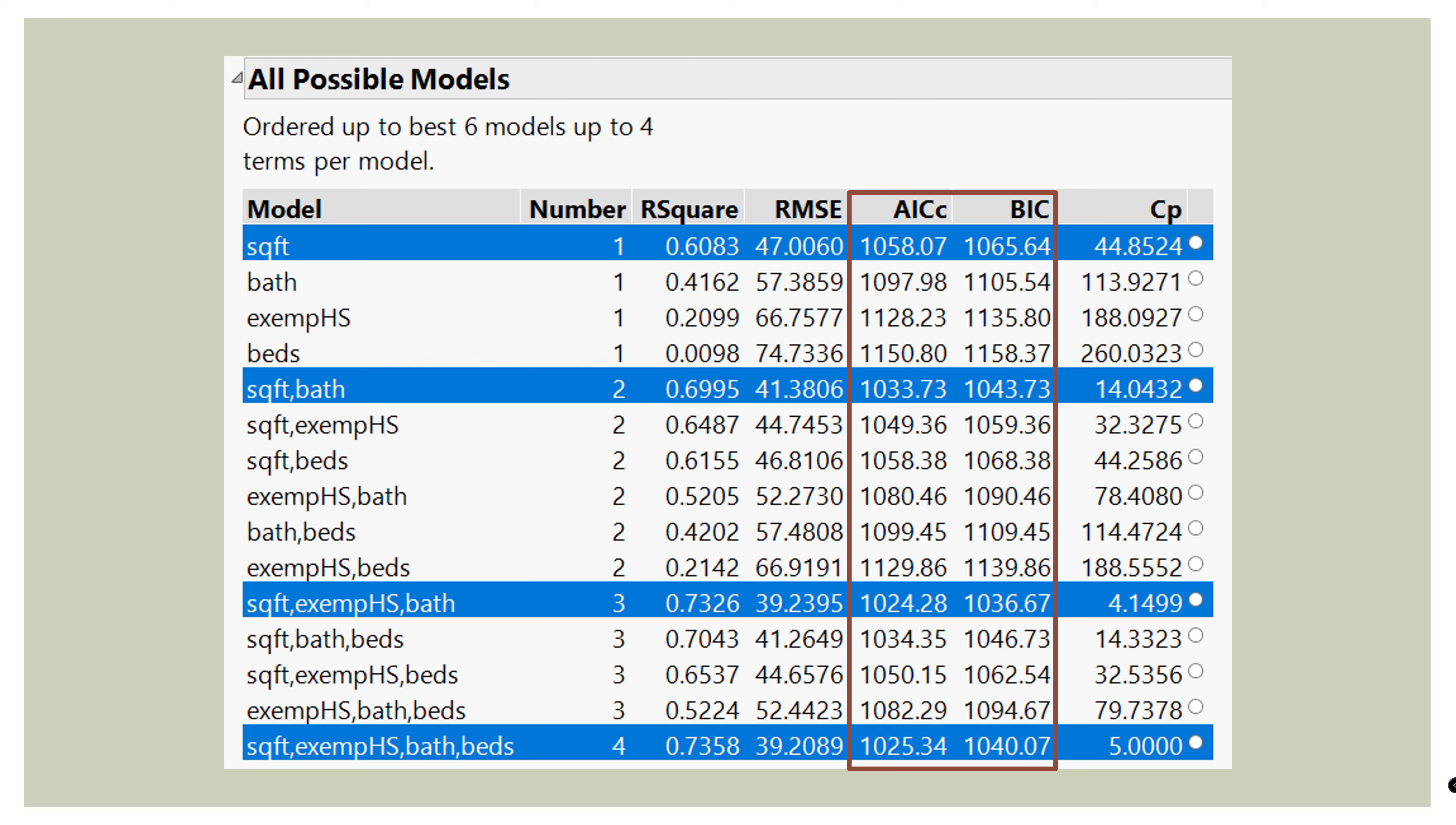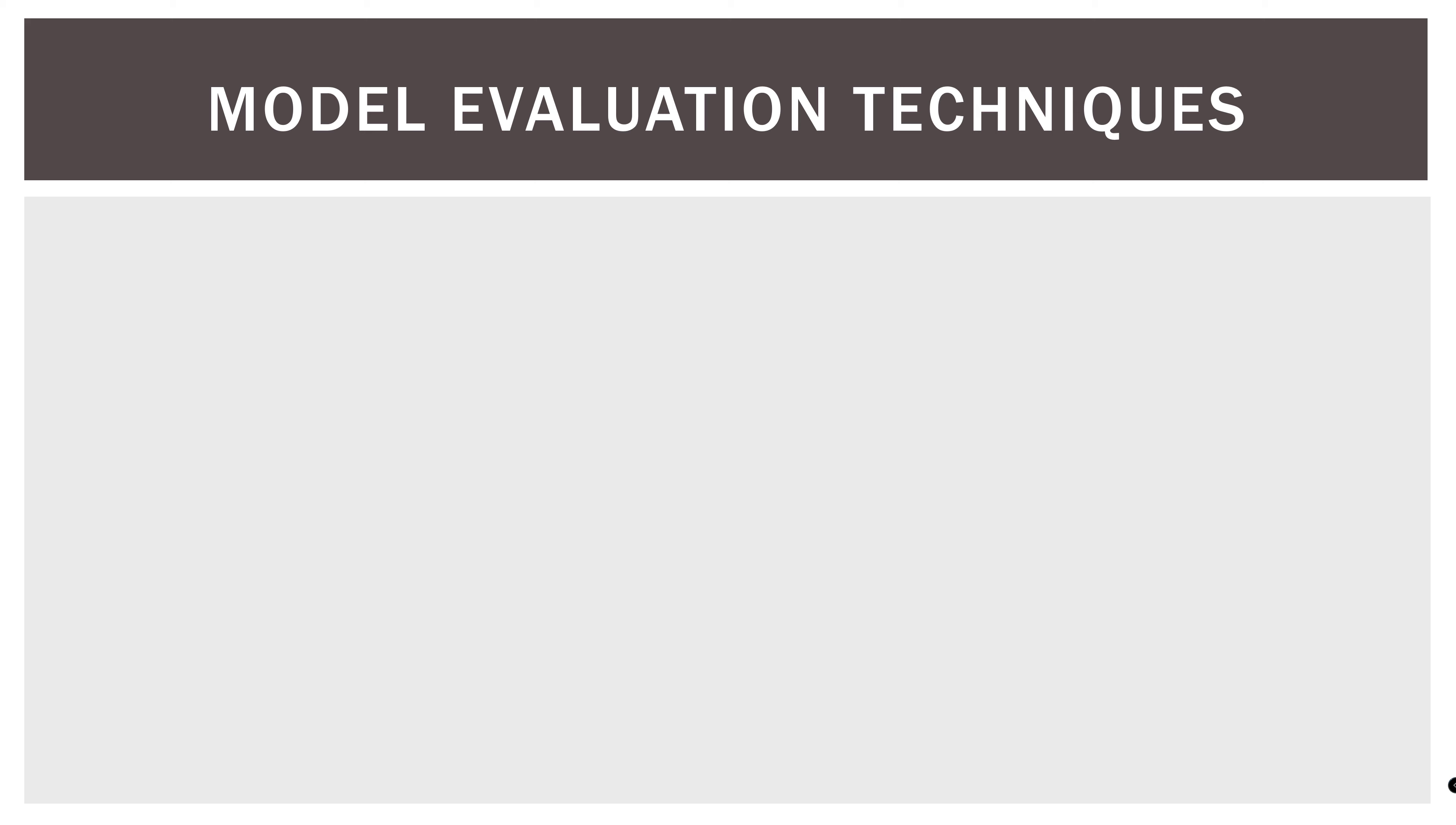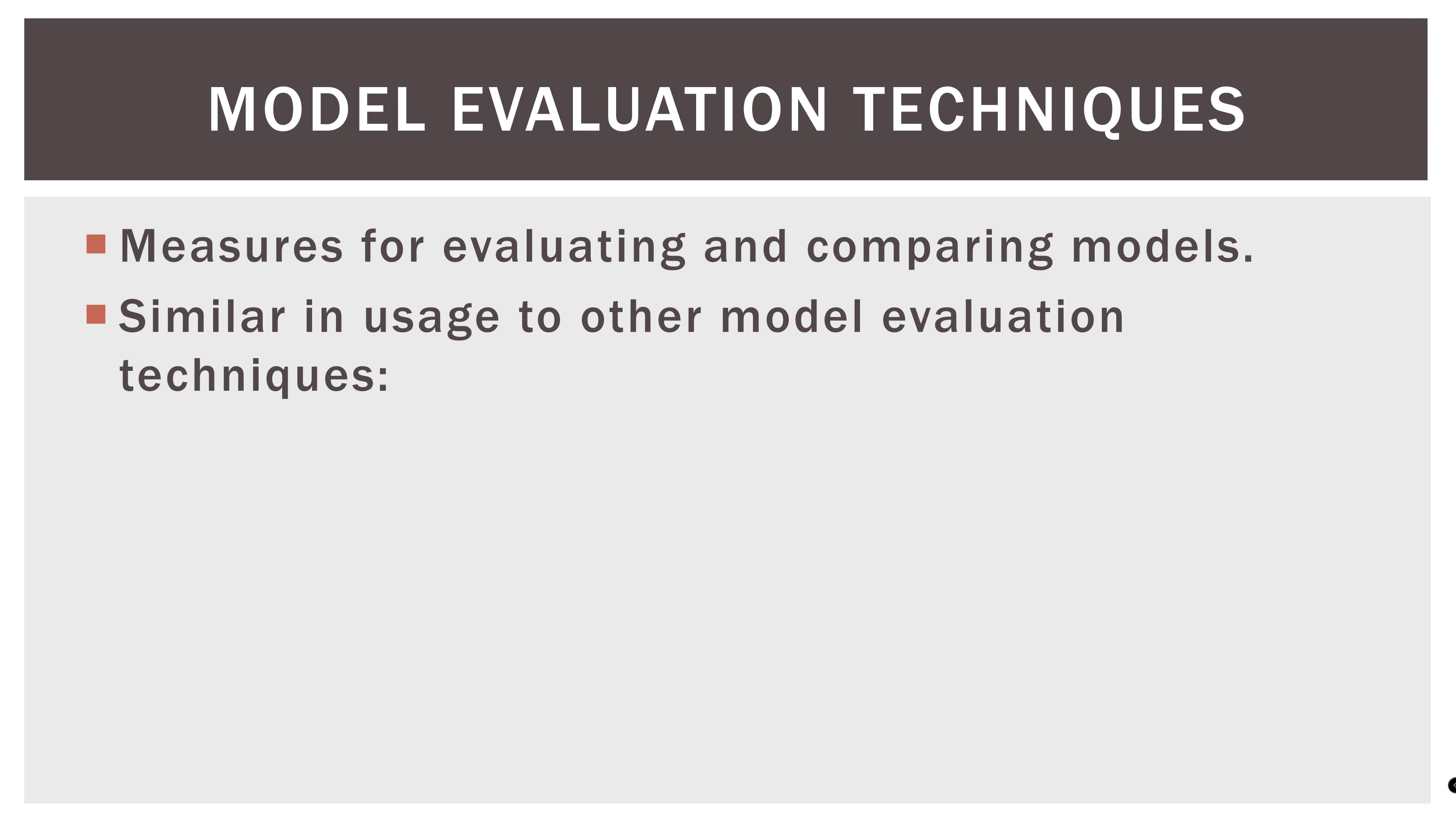The first thing you should notice about AICC and BIC is that the numbers are very close together. That's because they're actually kind of cousins of each other. Now, in this video, we're gonna talk about what they are, how to interpret them, and how to use them to select the best model. So first, these are just measures for evaluating and comparing models. It's similar in usage to other model evaluation techniques, such as the adjusted R square, the standard error of the regression, which is also the root mean square error or just S, and then we have Mallows CP.